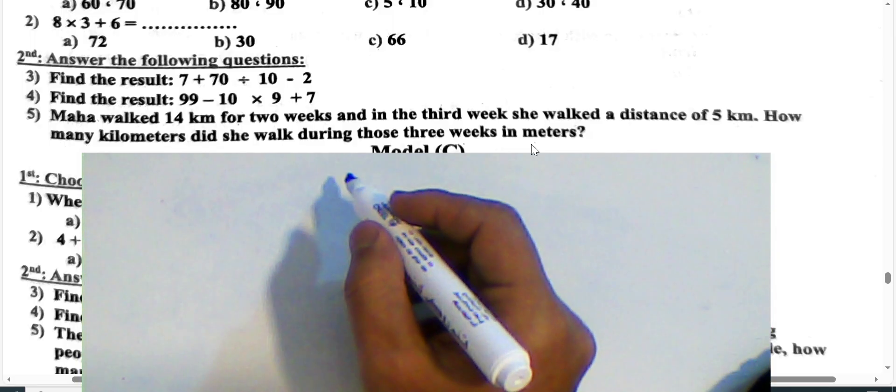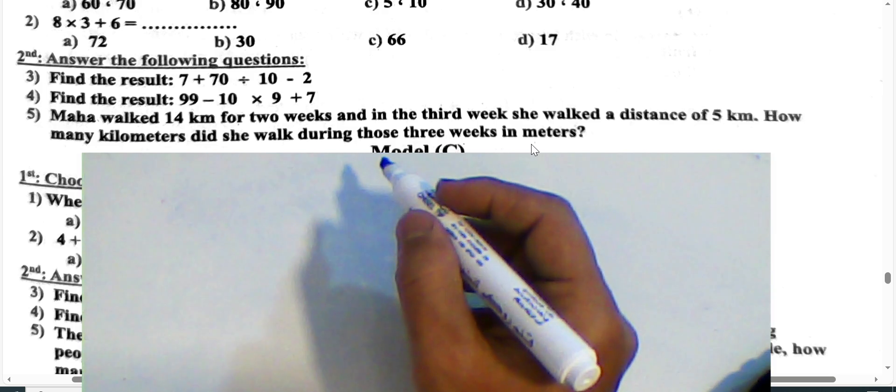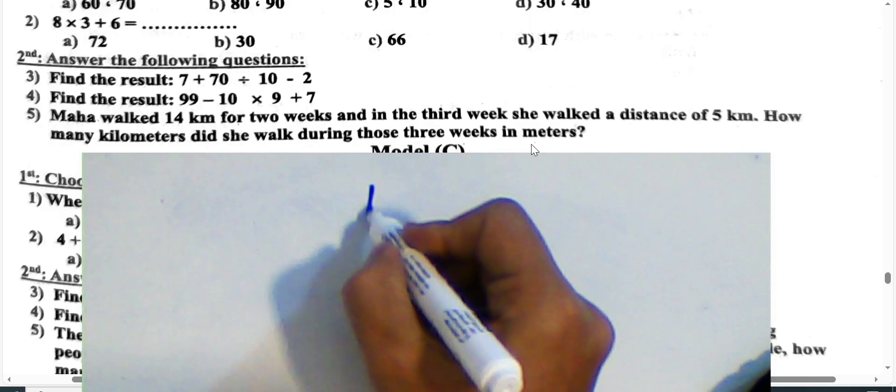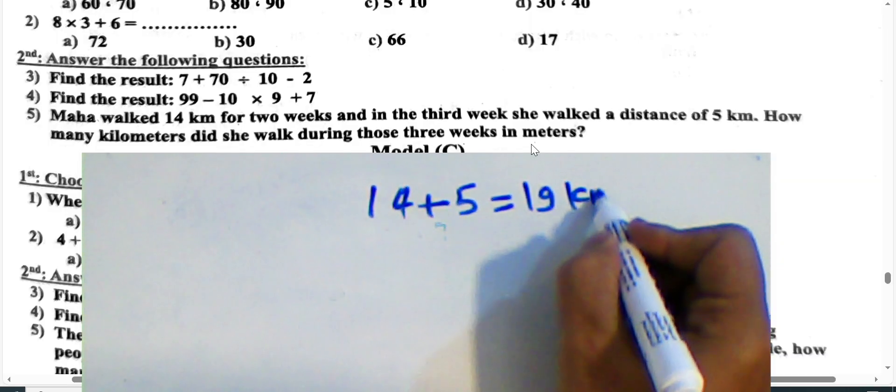Question: Maha walked 14 kilometers in 2 weeks, and in the third week she walked 5 kilometers. How many kilometers did she walk during those 3 weeks? We add the distances together: 14 plus 5. The total distance is 19 kilometers.